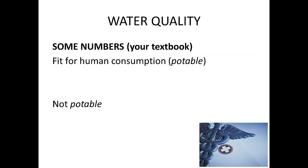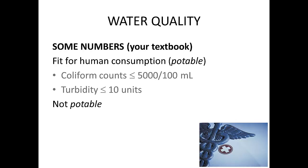Let's now associate some numbers to water quality. Your textbook presents the following values for potable water. Specifically, it identifies potable water as water having a coliform count less than 5,000 per 100 mL of water, and a turbidity of less than 10 units.